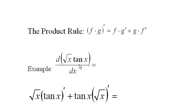I'm just going to apply the rule. The square root of x plays the role of f and the tangent of x plays the role of g. So it's f times g prime plus g times f prime. And now all we have to do is take the respective derivatives.